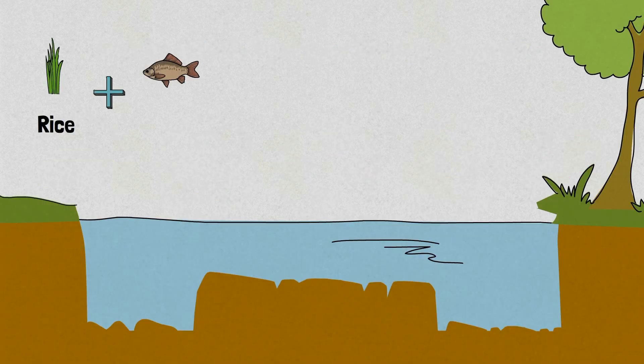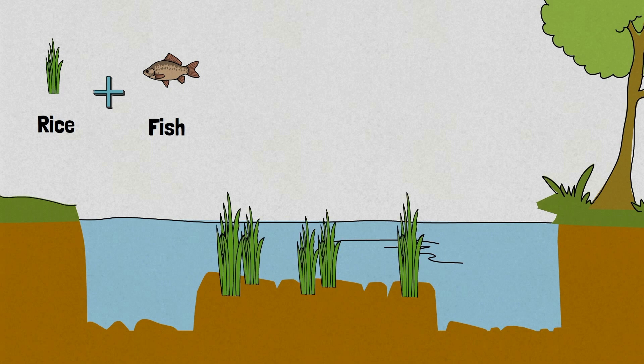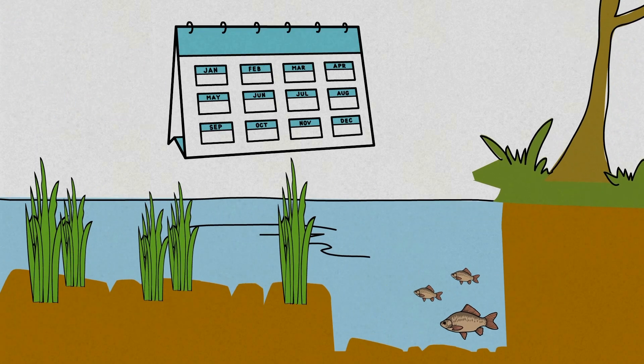Rice fish systems are a key example of an agroecological practice, where rice is cultivated in the same plot of land as naturally occurring or introduced fish populations, which are present either simultaneously or on rotation throughout the year.